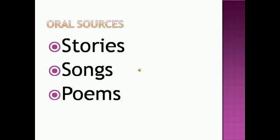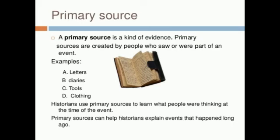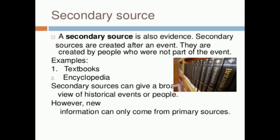There are many people in the past who did not write their histories in books. They told stories, poems, and songs to their generations in the form of history, and these are called oral sources of history. We can divide these sources into two types: primary sources and secondary sources. Primary sources include coins and monuments of a period, while secondary sources are records, accounts, or documents written much later.